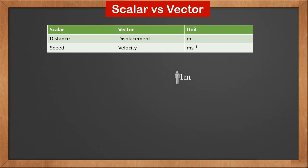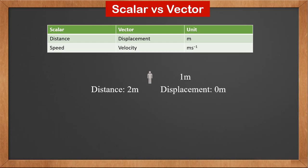For example, a person moves to the right by 1 meter, then to the left by 1 meter, and back to the starting point. The distance he traveled is 2 meters. However, the displacement is 0, because displacement is a vector, and the right and left moves cancel each other. The final effect is as if the person has remained still.